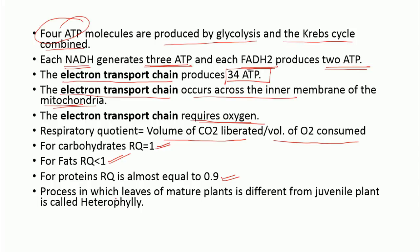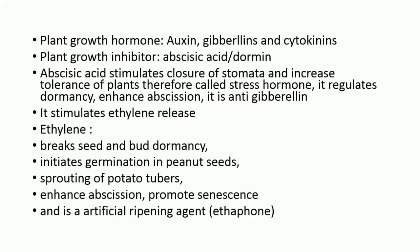The process in which mature plant leaves differ from juvenile plant leaves is called heterophylly. Now let's talk about hormones. Plant growth hormones are three: auxin, gibberellin, and cytokinin. The growth inhibitor hormone is abscisic acid, also known as ABA or Dormin. Abscisic acid is also known as the stress hormone because it helps in the closure of stomata — whenever water is reduced, it stops transpiration by closing stomata.